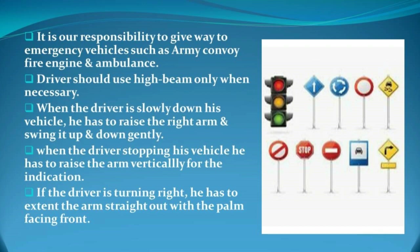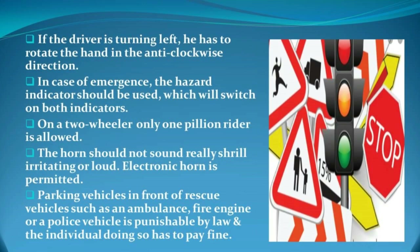Drivers should use high beam only when necessary and dim lights when there are oncoming vehicles or when driving closely behind another. When slowing down, raise the right arm and swing it up and down gently. When stopping, raise the arm vertically. When turning right, extend the arm straight out with palm facing front. When turning left, rotate the hand in the anticlockwise direction. In case of emergency, the hazard indicator should be used, switching on both indicators.